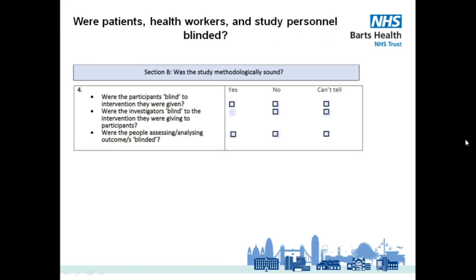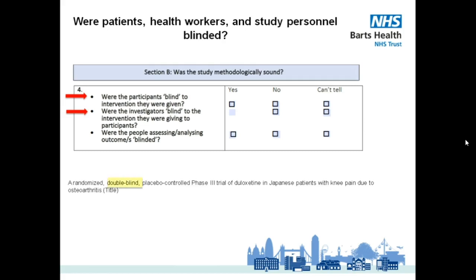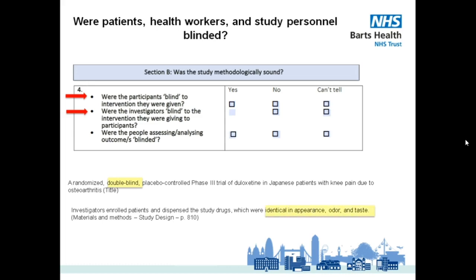Going back to our study, let's now answer the fourth question of the CASP checklist. We first ask whether the participants and investigators were blind to the intervention. From the term 'double blind' in the title, we can expect both patients and investigators to be blind. Details on how it was done can be found on page 810 under the study design section, where the authors describe the study drug as being identical in appearance, order and taste. So we can tick yes with confidence.